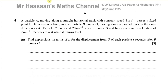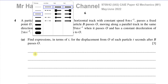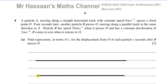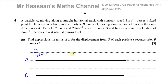Let me draw the setup. You have a track and a parallel track, with the point O at the same level on both tracks. Particle A is going along one track, B along the other, with A starting first. A is moving at a constant speed of 8 meters per second, so its acceleration is zero.